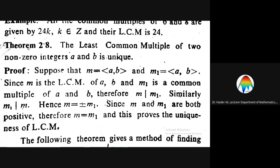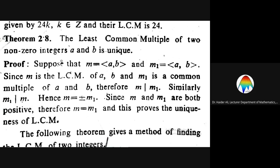We are going to prove a theorem. What this theorem says is very simple: the least common multiple of two non-zero integers a and b is unique. That is, the LCM of two non-zero integers a and b is unique.